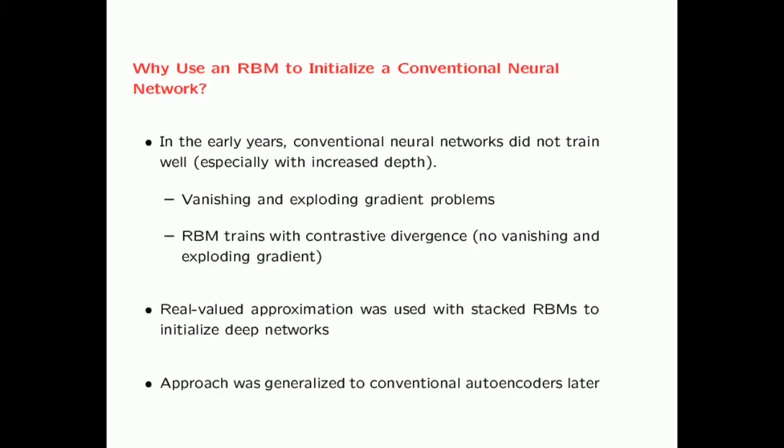One question that arises is why one would use an RBM—which requires expensive Gibbs sampling even to sample a training point—to initialize a conventional neural network. One reason is that in earlier years, conventional neural networks did not train very well, especially with increased depth. In the earlier years, vanishing and exploding gradient problems were huge challenges. Because an RBM trains with the contrastive divergence algorithm, there were no vanishing and exploding gradient problems, so this approach was seen as a shortcut to training deep neural networks—especially using stacked RBMs to initialize deep networks.